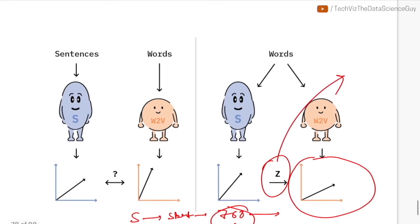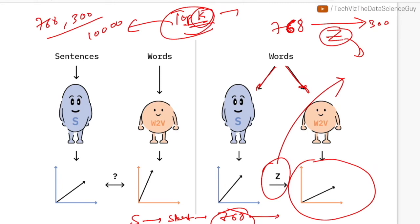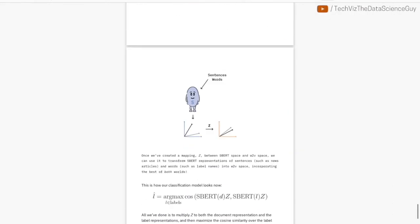Now, how do you learn this Z function is the question. That can be done without manually labeling any of those datasets. So what they do is they pick top K words from the word2vec vocabulary and pass it through sentence BERT and get their representation of 768 dimensions. They pass these words through word2vec as well and get a 300 dimension representation. So now for a word, we have a 768 dimension representation and a 300 dimension representation. So we learn a neural network that will take in this as input and compress it to a 300 dimension representation. This is the function they call ZMAP.